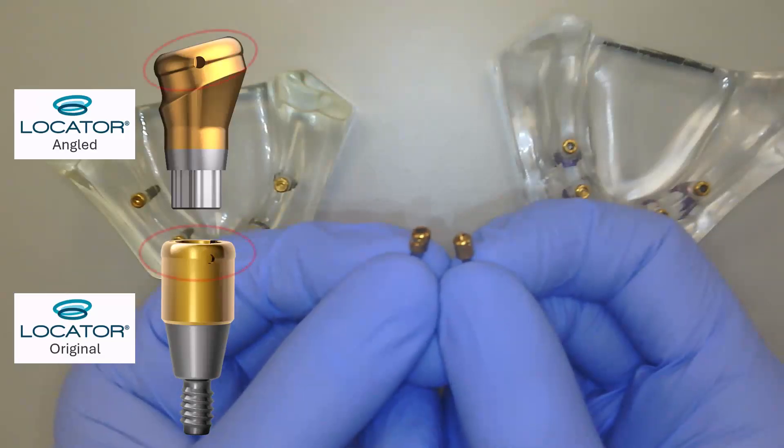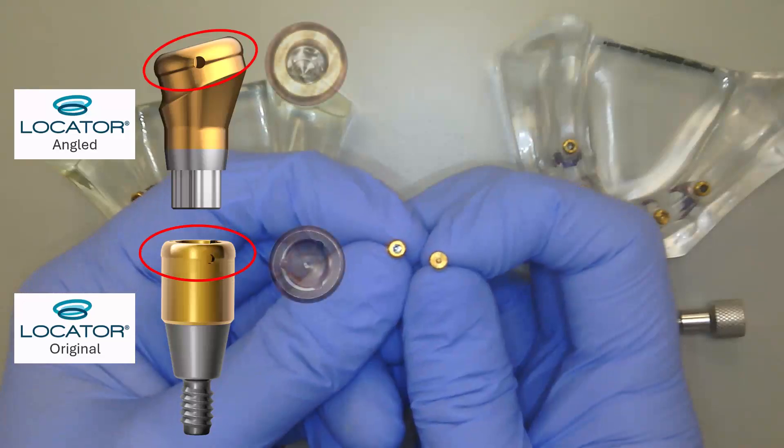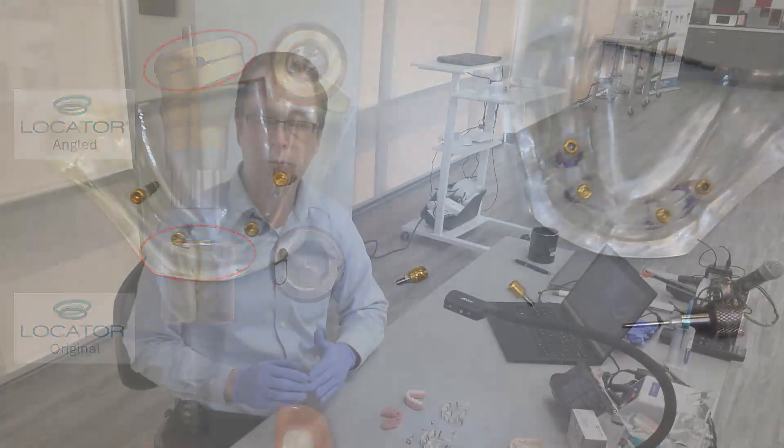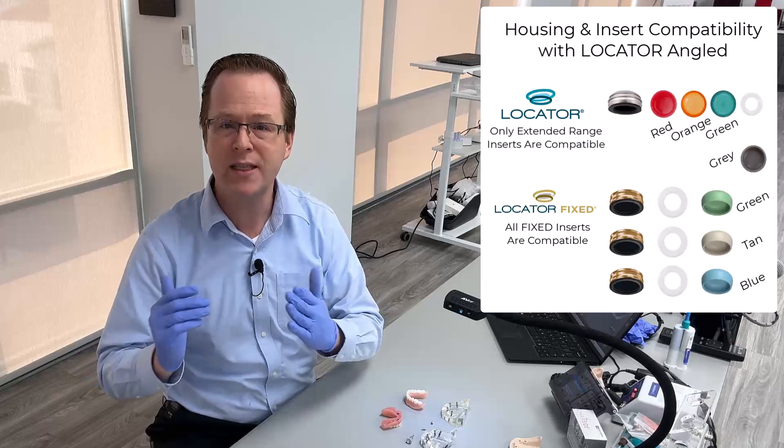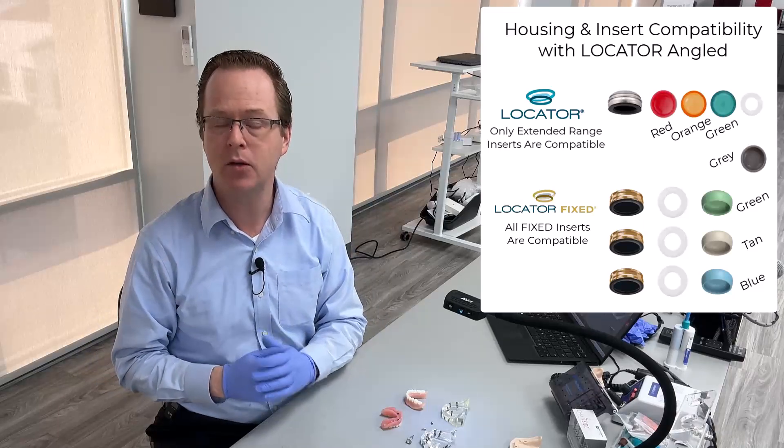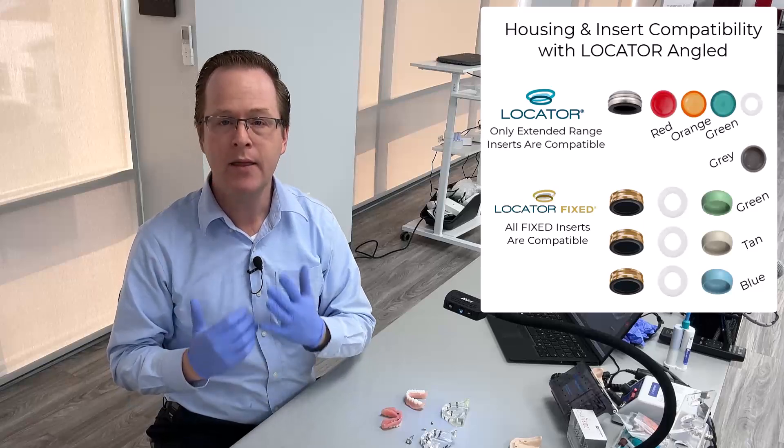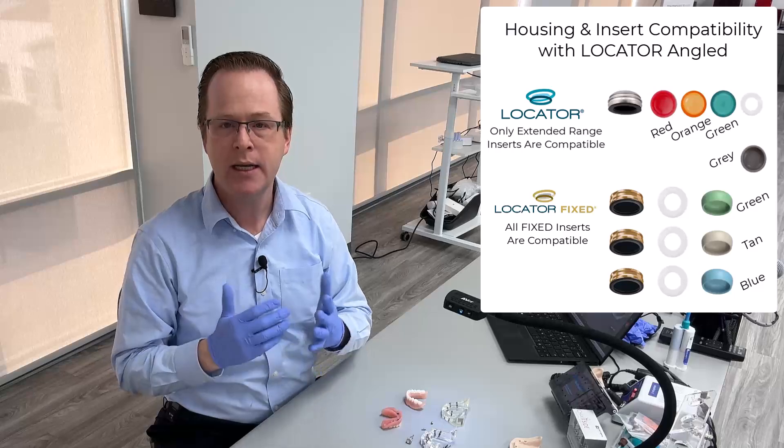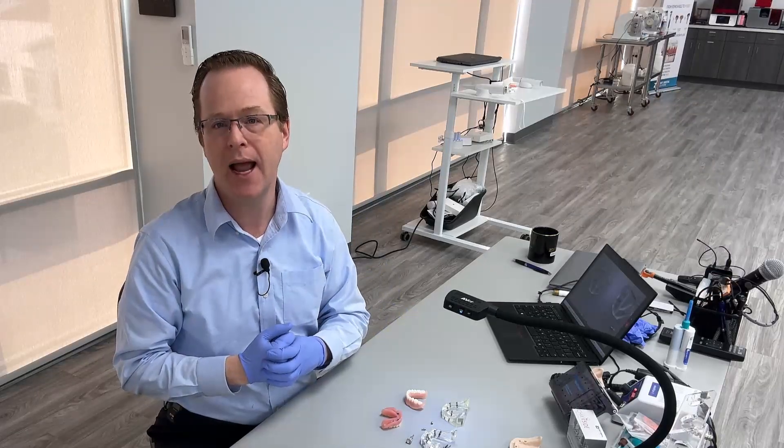The external geometry of the abutment is exactly the same. The part that differs just ever so slight is the internal geometry. And that's part of the reason why with locator angled, the locator angled system is compatible with extended range inserts as well as locator fixed inserts. It is not compatible with your blue, pink, and clear locator standard range inserts. And this is important because that little button that's on the inside of the standard range inserts is not compatible with the channel that's in the locator angled abutment.